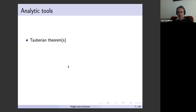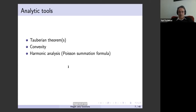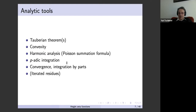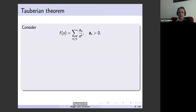So what kind of analytic tools do we have in mind? Tauberian theorems, convexity in two shapes and forms, harmonic analysis, p-adic integration. Then of course, when you do the work, at some point you have to prove convergence, integration by parts, geometrically iterated residues — in brackets, because I won't have an example of that — but there's actually a big machinery helping. And complex analysis in higher dimensions is also very relevant.